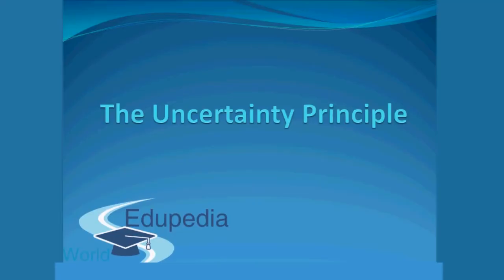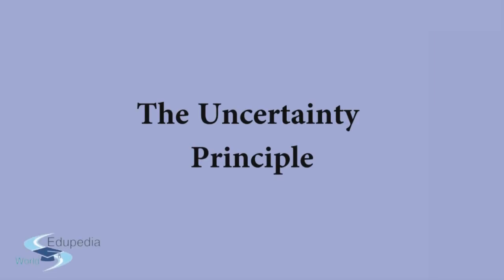Hello everyone and thanks for watching Edupedia World videos. In this video we derive a relationship which we've seen many times before and used in many problems, and that is the Heisenberg uncertainty principle. It says that delta x times delta p is greater than or equal to h by 4 pi.